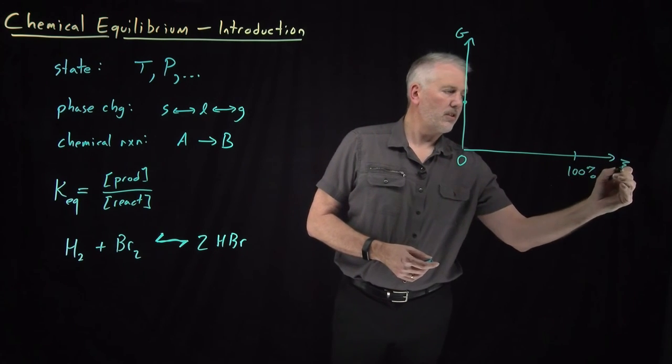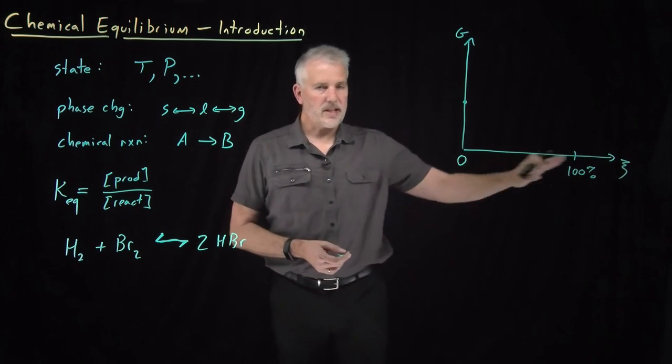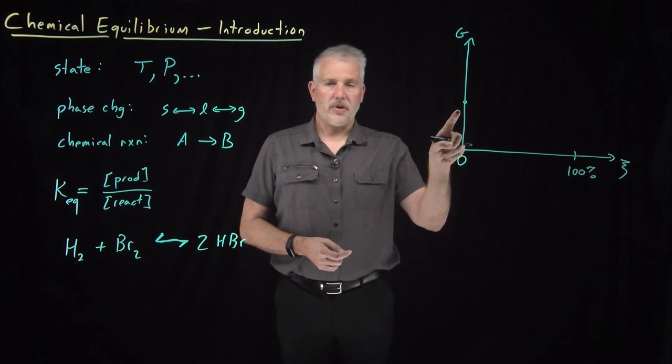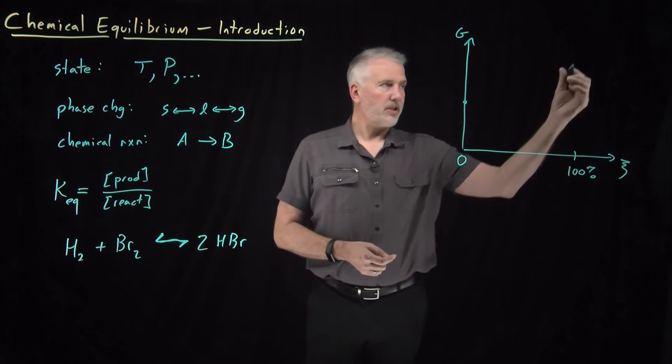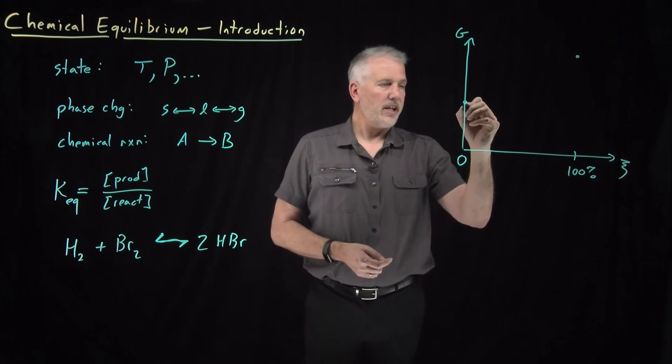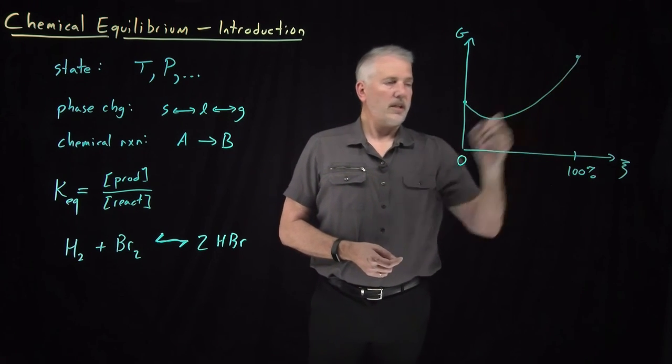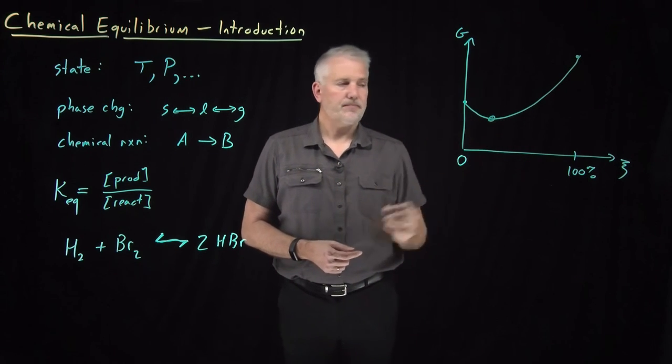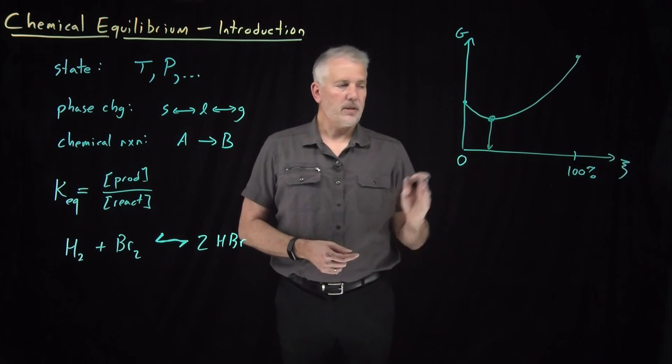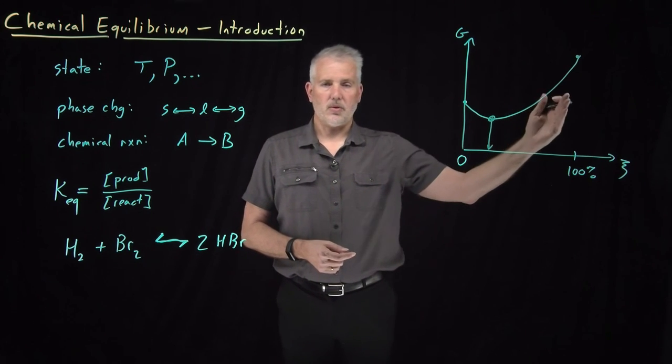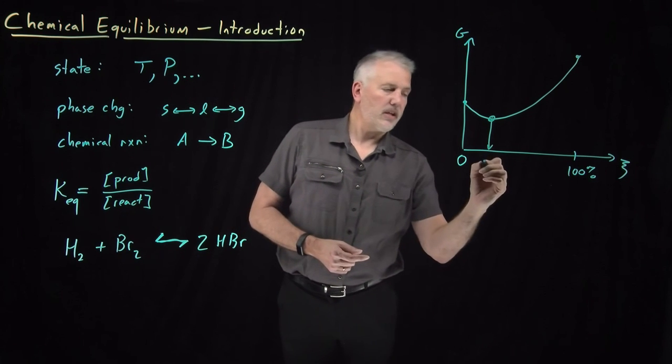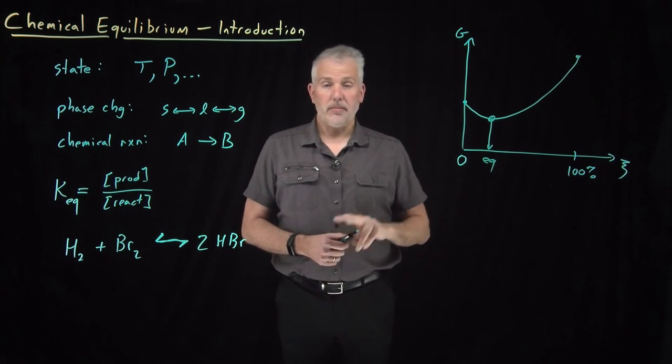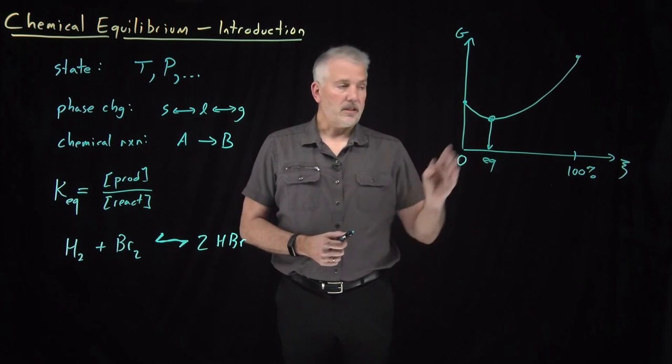So this axis, we'll talk more about what this axis is exactly coming up soon. But if the reaction doesn't proceed at all, it has some free energy. If it proceeds all the way to completion, it might have some different free energy. And at every point in between, it has some different value of the free energy. So when the free energy is minimized at some value other than 0% or 100% completion for the reaction, then we say that the reaction reaches equilibrium at some intermediate extent of the reaction.